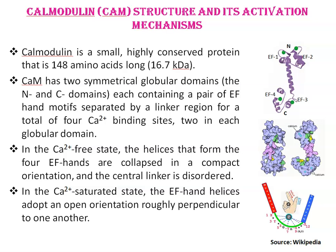Calmodulin has two symmetrical globular domains: the N-domain and the C-domain, each containing a pair of EF-hand motifs separated by a linker region, for a total of four calcium ion binding sites — two in each globular domain.